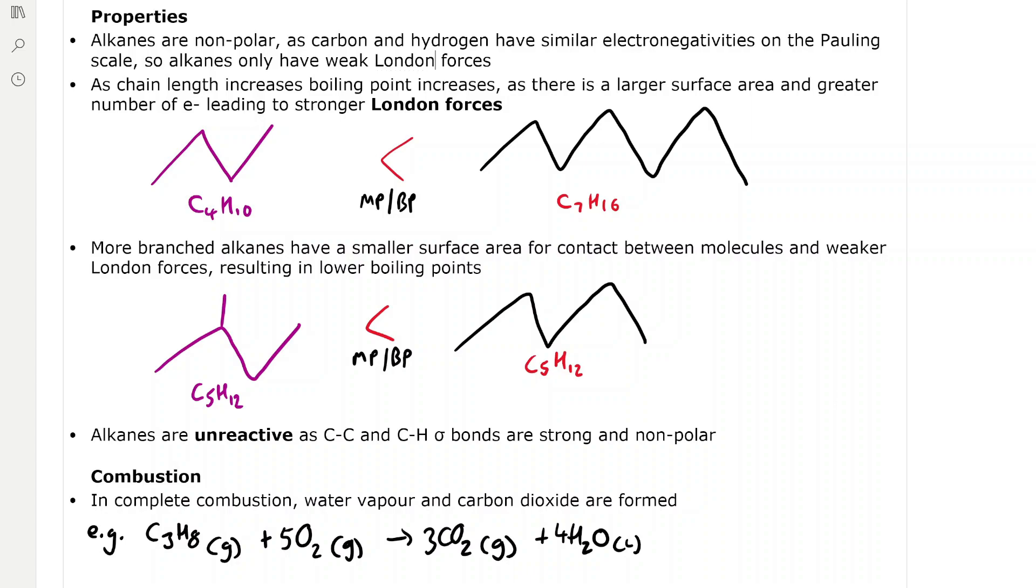More branched alkanes have a smaller surface area for contact between molecules so they have weaker London forces resulting in lower boiling points. These branches push the molecules apart so they can't interact as closely with each other.